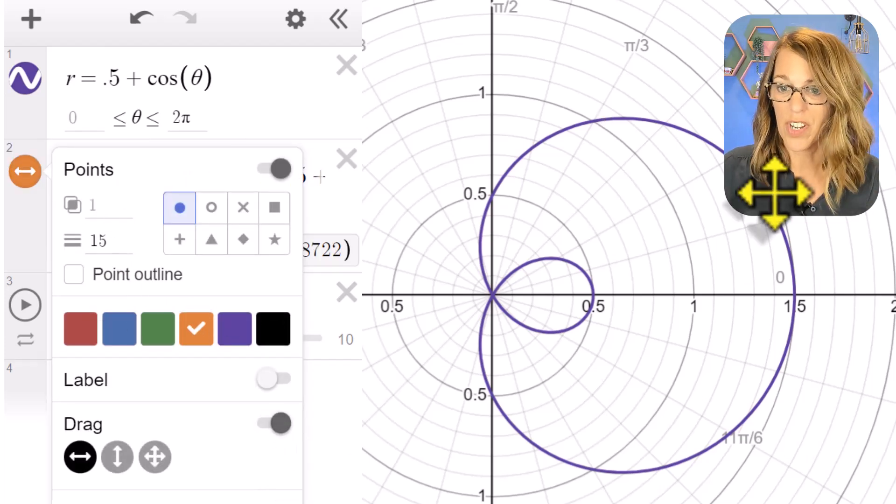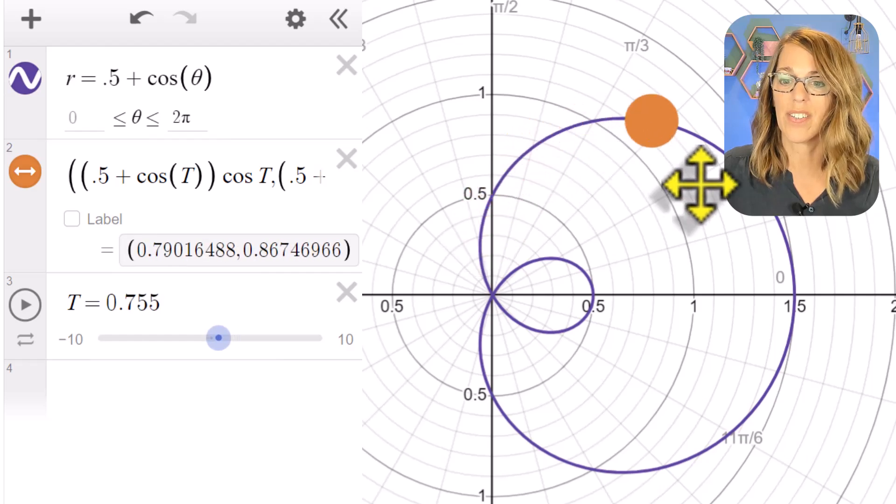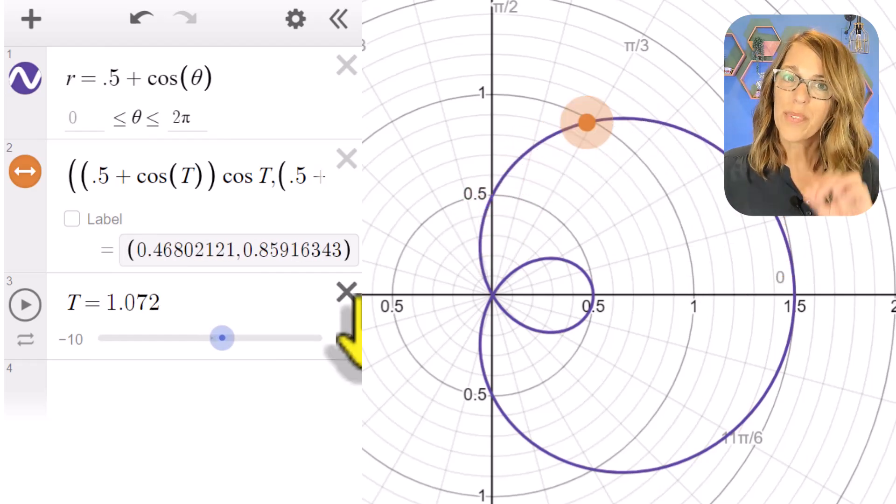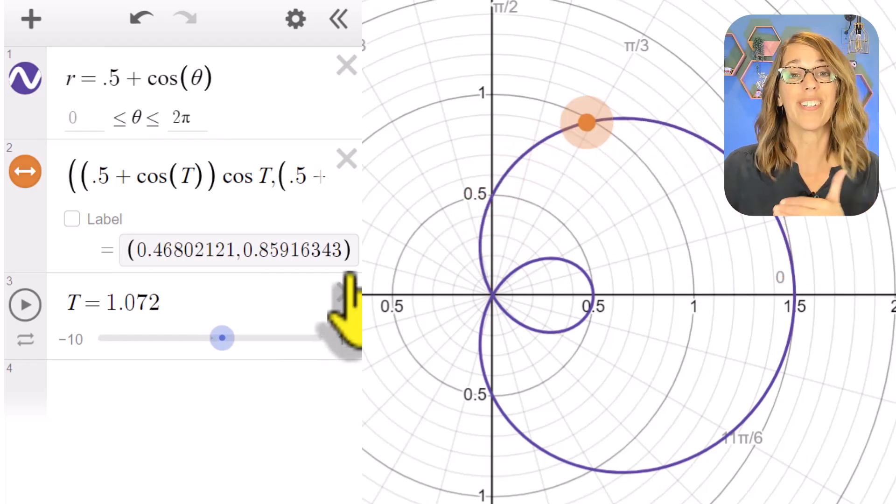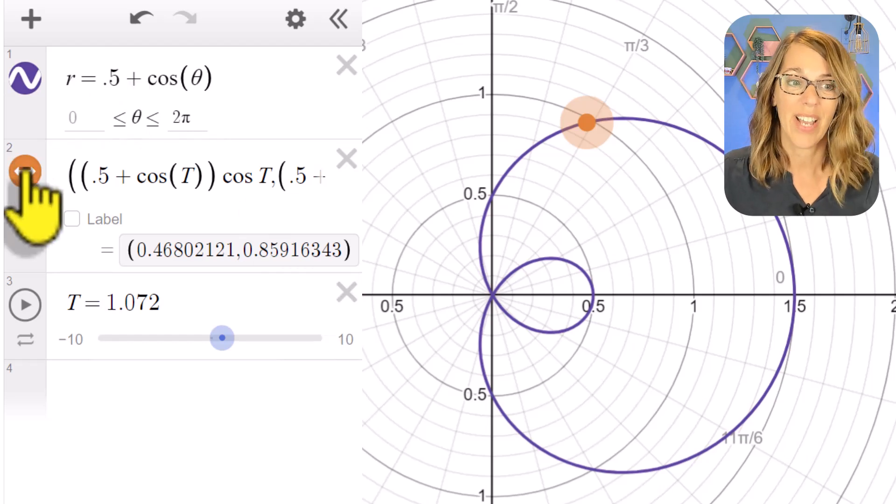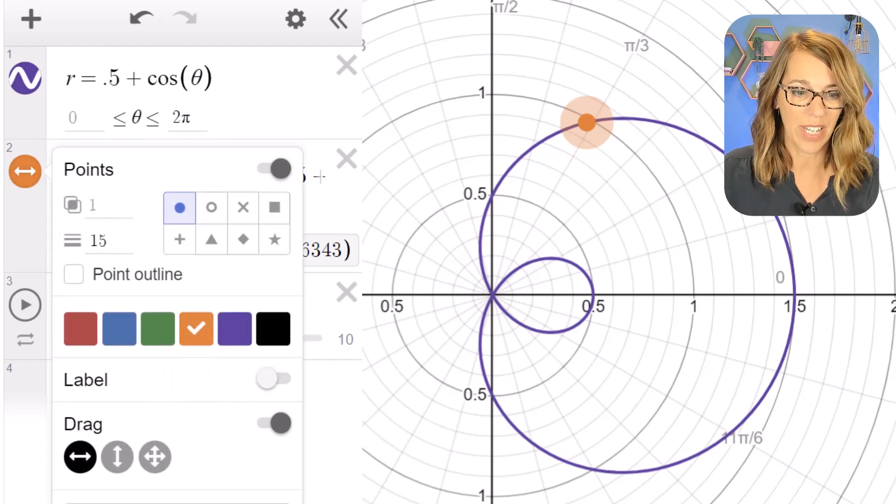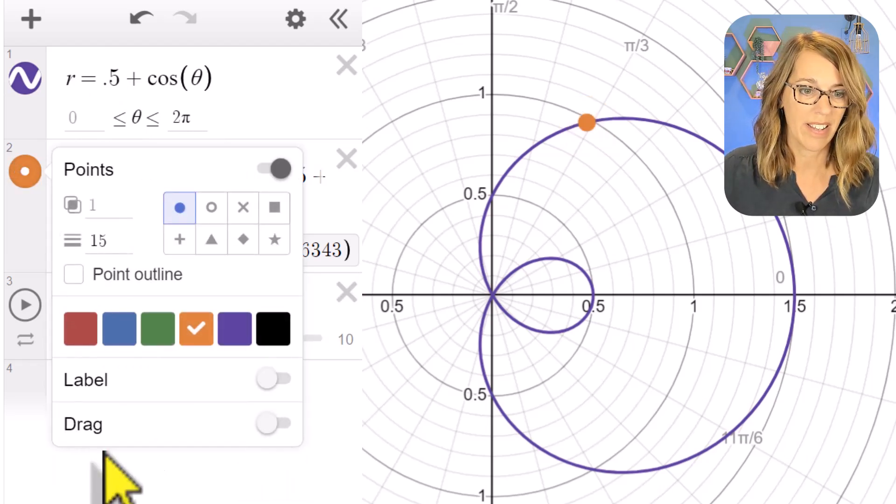I can even put on the drag function, which allows me to trace this around the graph. But what I really want to do is to trace this between 0 and 2π. I'm going to remove drag by clicking and holding. So let's remove drag.